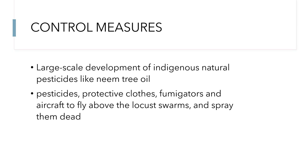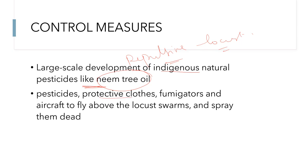Before employing chemical methods, there are some indigenous natural pesticides — like neem tree oil. If you spray neem oil on the crops, it has a repulsive action on locusts, keeping them away from the plants. It is 100% harmless, will not affect the quality of fruits or vegetables in horticulture fields, and is completely safe for human consumption. Protective clothing, fumigators, and aircraft can also be used to control locust swarms.